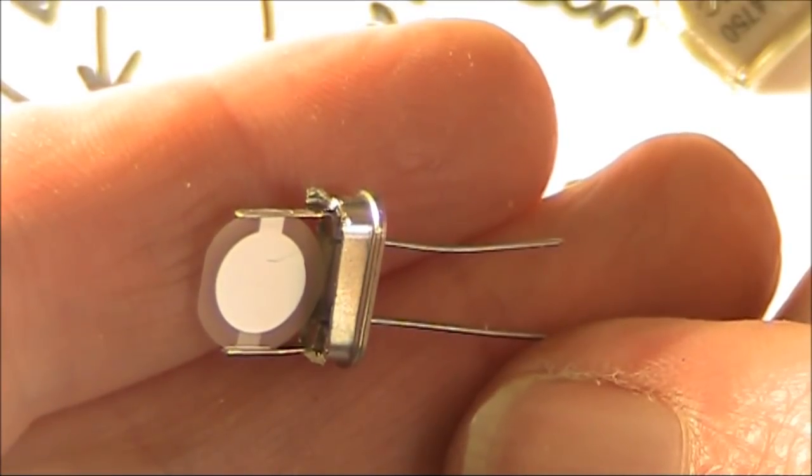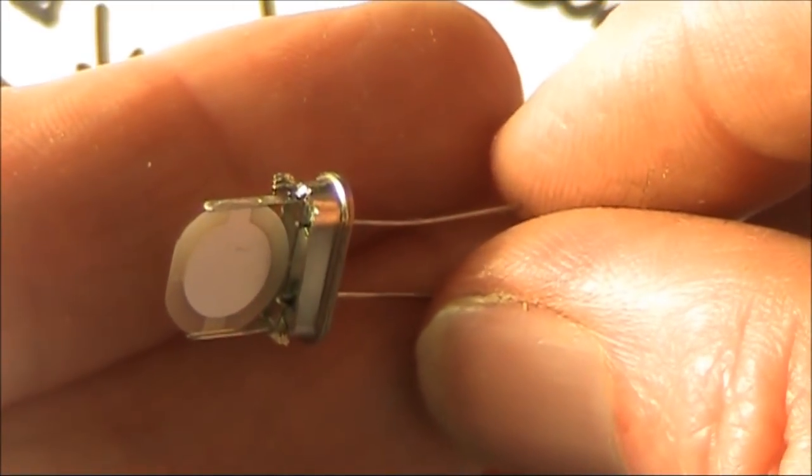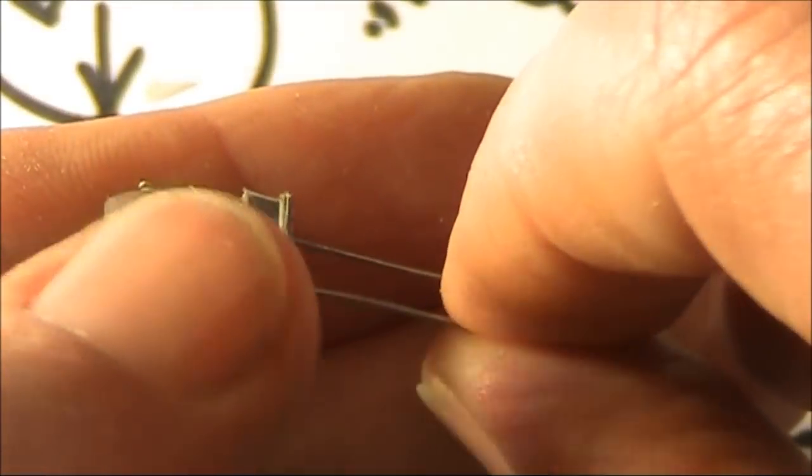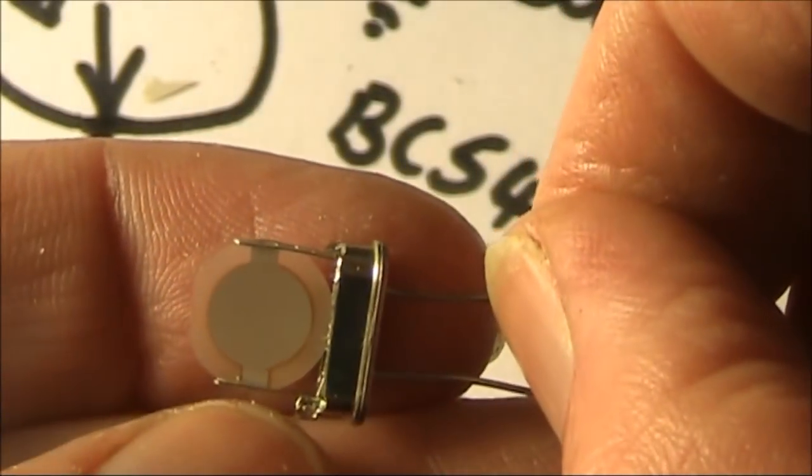When you make the cut, the crystal looks like this. It's a sandwich. Quartz in the middle, and two plates either side. One plate is connected to one pin, and the other plate to the other.